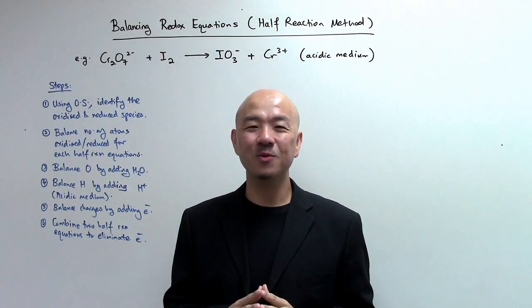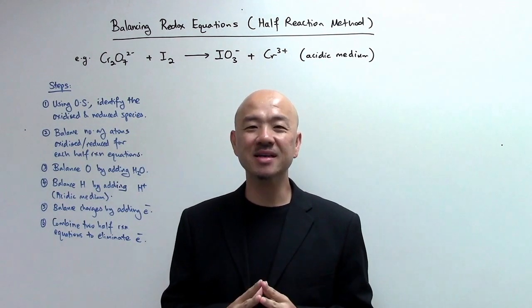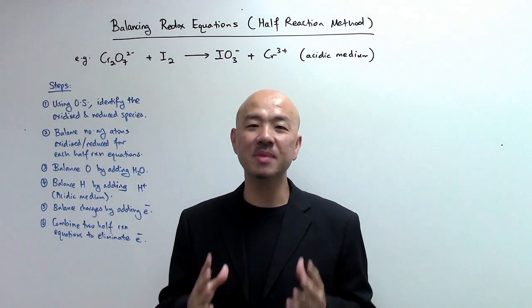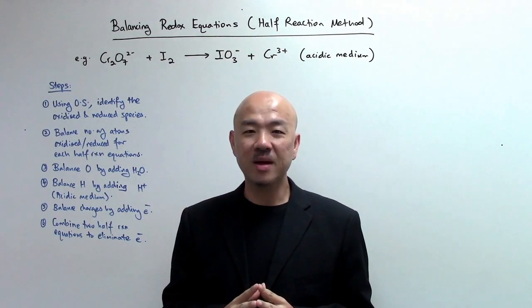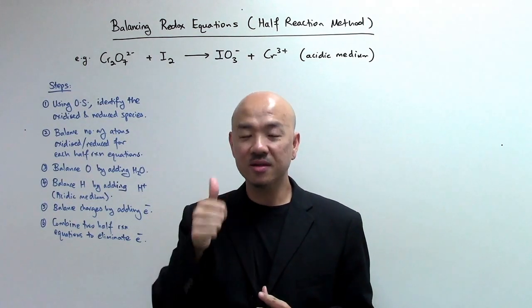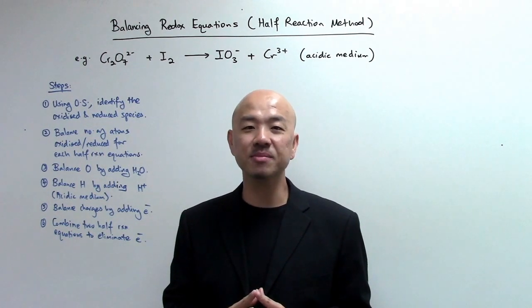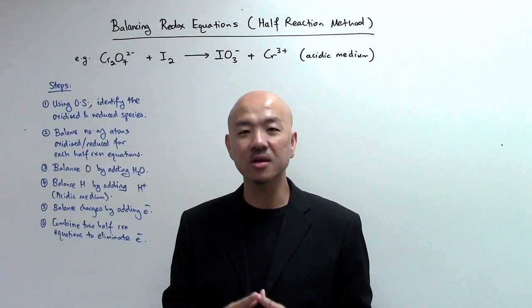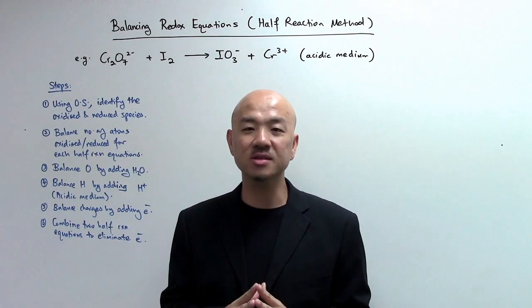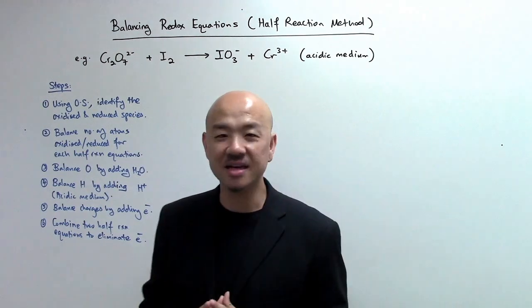Hi, this is Sean Chua. Welcome back to A-level h2chemistry.com. Today we're going to discuss a very important concept known as balancing redox equations. There are two methods to balance redox equations. The first method is known as the half reaction method and the second one is known as the oxidation state method. Today, at the end of this video, you're going to learn how to balance redox equations using the half reaction method. Let's get started.